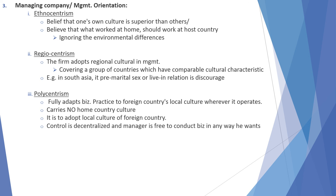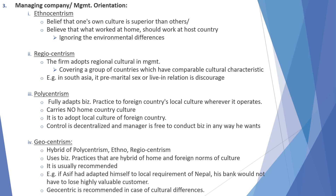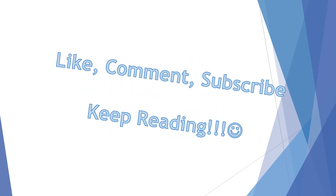In polycentrism, whatever country the firm operates in, it carries no home country culture — it adopts the local culture of the foreign country. Control is decentralized and the manager is free to conduct business in any way he wants. Next is geocentrism, which is a hybrid of polycentrism, ethnocentrism, and regiocentrism — it uses business practices that are a hybrid of home and foreign cultural norms. It is usually recommended. For example, if a chief had adapted himself to the local requirements of Nepal, his bank would not have lost highly valuable customers. Geocentrism is recommended in cases of cultural differences.